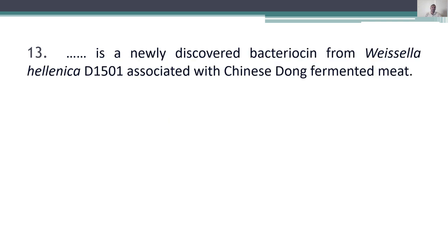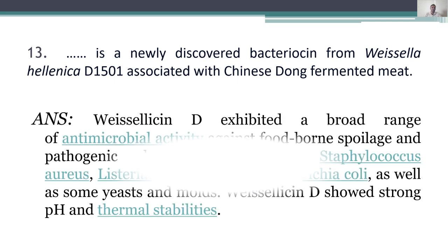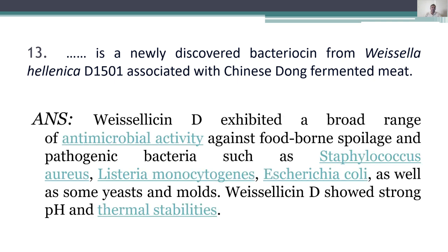Thirteenth question: Visalicin D is a newly discovered bacteriocin from Weissella hellenica D1501 associated with Chinese dong fermented meat. Visalicin D exhibited a broad range of antimicrobial activity against foodborne spoilage and pathogenic bacteria such as Staphylococcus aureus, Listeria monocytogenes, and E. coli, and is also used against some yeast and molds. Visalicin D shows strong pH and thermal stabilities.